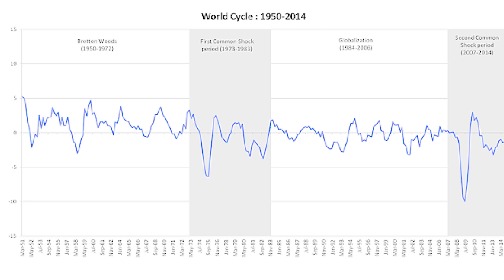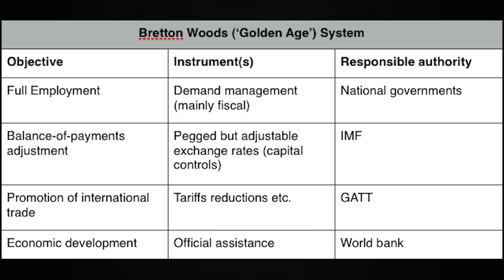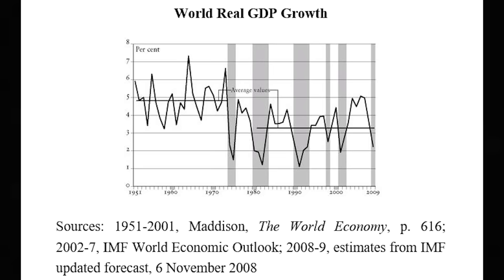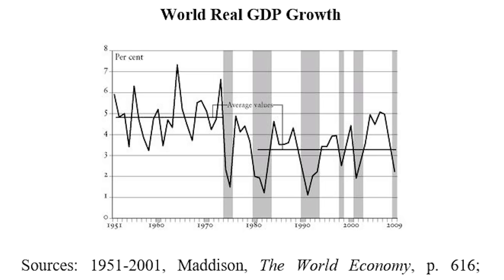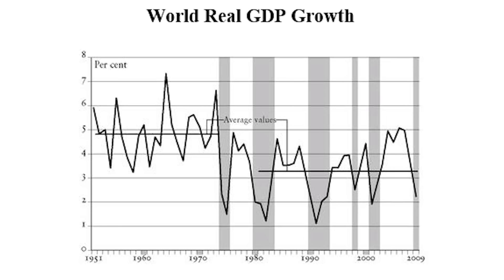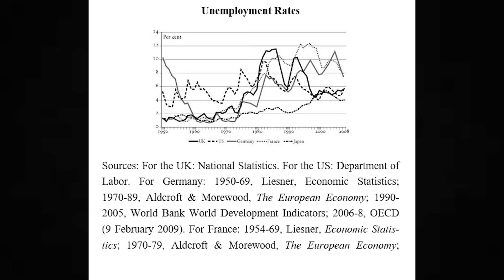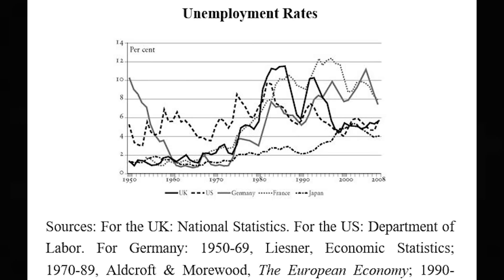The era of embedded liberalism lasted from roughly 1945 to 1979 — only 34 years — but was one of the most uniquely prosperous and stable periods in human history. It is frequently referred to by historians as the Golden Age of Capitalism. On the macroeconomic scale, the economic growth and health experienced during this period was unprecedented. World real GDP growth averaged 4.8% for the entire period and never once dipped lower than 3% between 1951 and 1973, which essentially means that there was not a single recession during that entire time. Unemployment levels were consistently kept at historically low rates, fulfilling the major promise of the embedded liberal compromise.